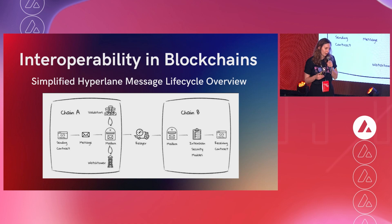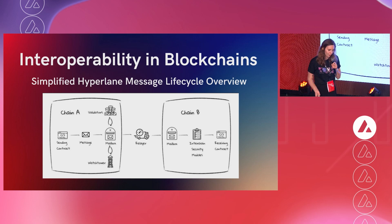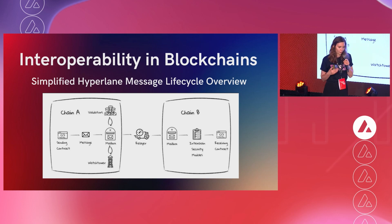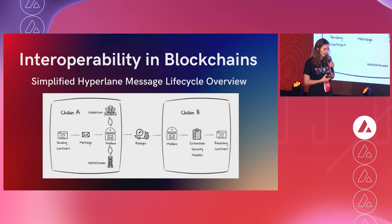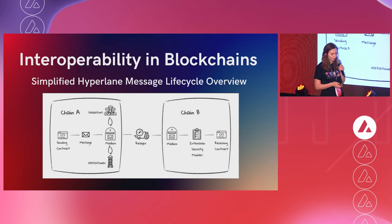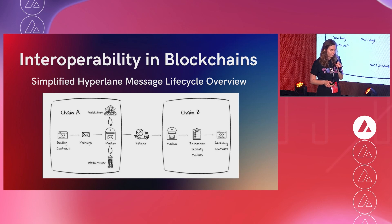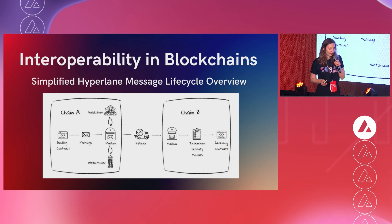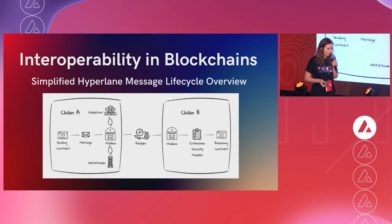For example, the origin chain could be Ethereum and chain B could be Avalanche. The message goes through the mailbox contracts, through the relayer, through the watchtower. ISMs — interchain security modules — check if the message is not malicious, and then it gets delivered to the receiving contract. This is a high-level overview of how the message life cycle works, and we have much better documentation on how that works in our docs.